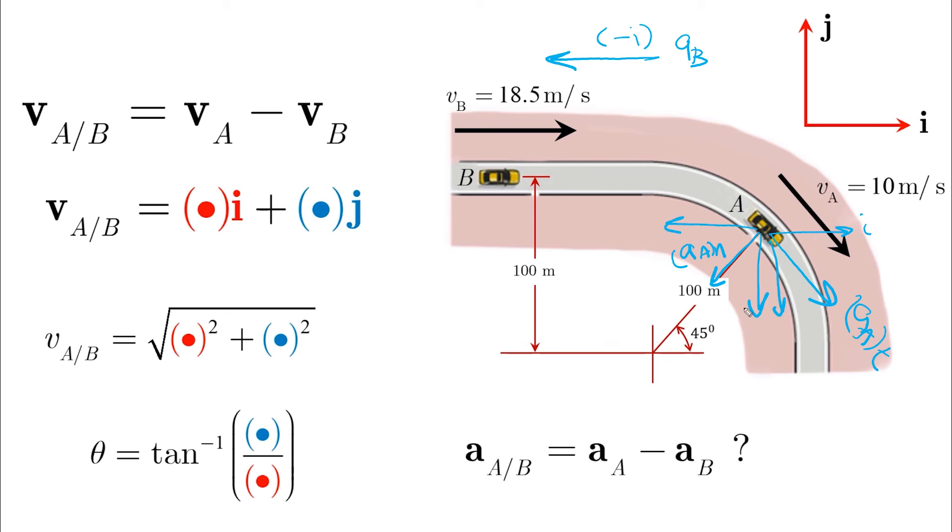So the acceleration of A will have four components and the acceleration of B will have only one component. And we need to add them all together and use the same thing as we did here in the velocity to find the magnitude and the direction.